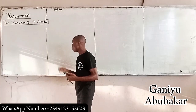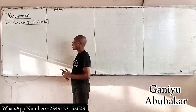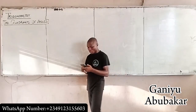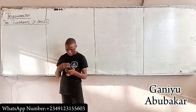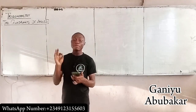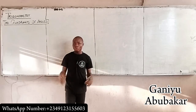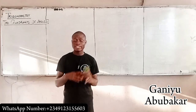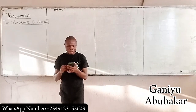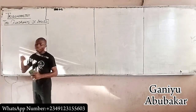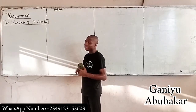Let us discuss the concept of quadrant of angle. The concept of quadrant of angle helps in reducing larger angles to an acute angle, most especially the special angles. When it comes to the concept of quadrant of angle, we try to reduce larger angles into smaller angles, basically into special angles such as 30, 45, 60, and 90 degrees.